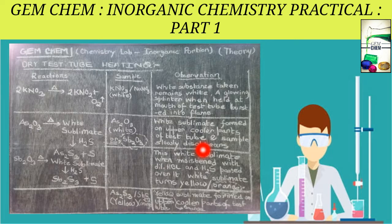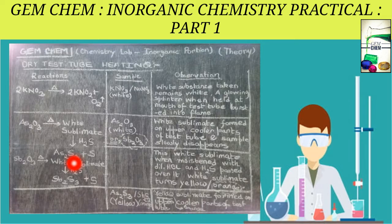The white sublimate turns yellow for As2O3 due to formation of As2S3 (yellow), and orange for Sb2O3 due to formation of Sb2S3. Regarding the sulfide samples themselves: As2S3 is yellow in color, with a yellow sublimate on the cooler parts. Sb2S3 appears black in color as a sample but gives an orange sublimate on the cooler upper parts of the test tube when heated.